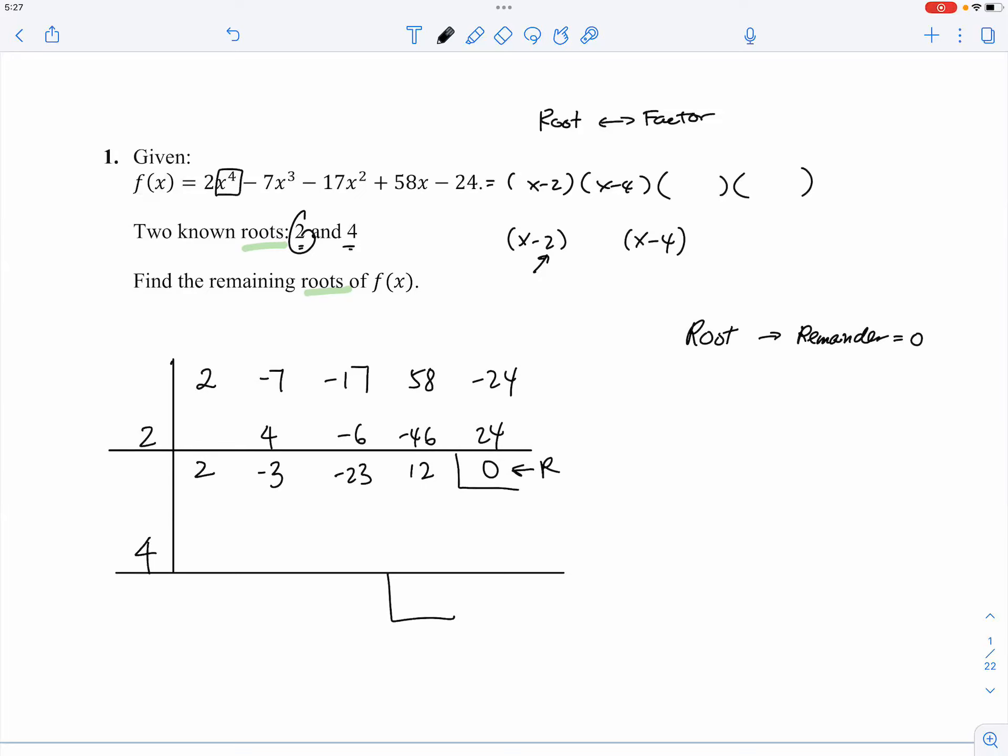Now, some students, they use the original to divide by 4. Nope, nope, nope. You want to continue because that's how you bring the fourth power expression all the way down to quadratic so that we can factor. So, again, we bring down a 2. 4 times 2 is 8. And then negative 3 plus 8 is 5. 5 times 4 is 20. And then you've got a negative 3. Negative 3 times 4 is negative 12. And hooray, we've got a 0.